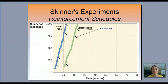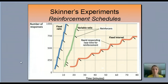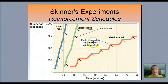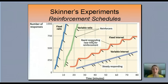A variable ratio — where you give reinforcement every 3, 4, or 5 times, unpredictably — also produces pretty quick learning in a short amount of time. The ratios are very quick learning. Fixed interval, where reinforcement comes after a certain amount of time, takes longer but eventually gets up there — it's rapidly responding near the time for reinforcement. Variable interval shows steady responding but takes a longer time overall.